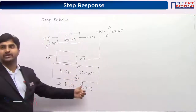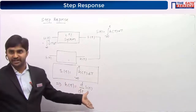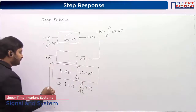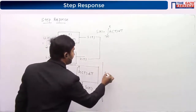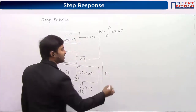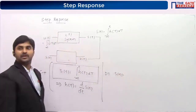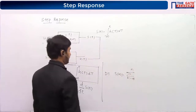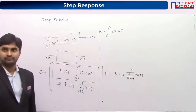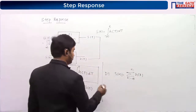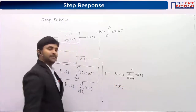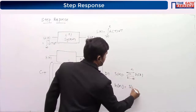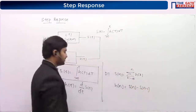If you want h(t) from s(t), you have to differentiate it — h(t) = d/dt of s(t). This is for continuous time. In the case of discrete time, s[n] is equal to the summation from k = minus infinity to n of h[k]. The differentiation is replaced by the difference: s[n] minus s[n-1].